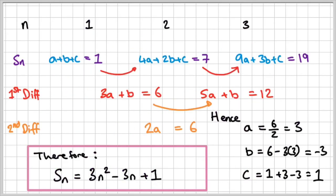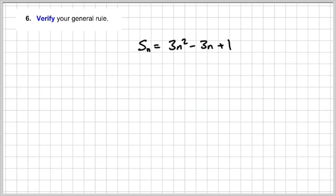If I substitute these values of a, b, and c into the general formula an² plus bn plus c, I get a equals 3, so 3n squared; b is minus 3, so minus 3n; and c is plus 1. So the formula is 3n² minus 3n plus 1.